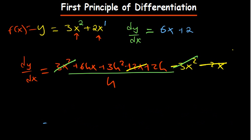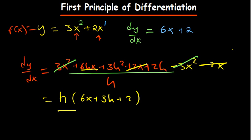So you can clearly see that h is common, so you can easily factorize it on the top part. So if you remove h, you remain with 6x plus 3h plus 2, and then the h on the bottom can now divide.